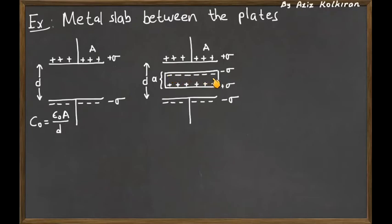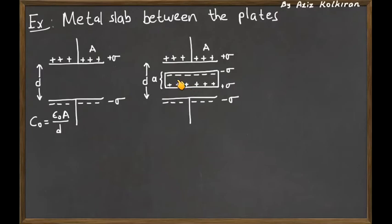Initially, this slab has no net charge. Even after we insert it, the total charge remains zero, but because of the electric field there will be induced charge densities on the surfaces. The upper surface will have a negative charge density and the lower surface a positive charge density, in order to make the electric field inside the metal slab zero. We know that every metal has zero electric field inside, so to achieve this, the charges must distribute on the slab in this way.